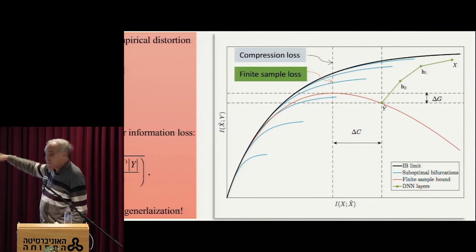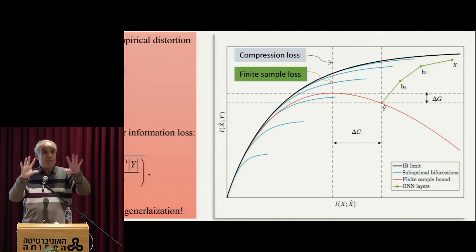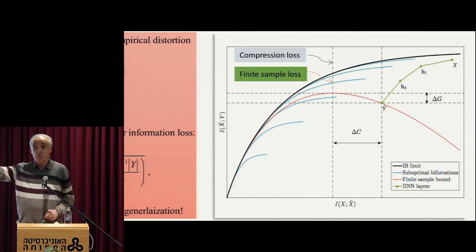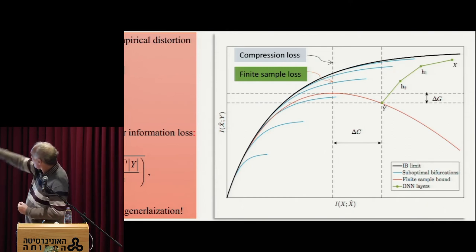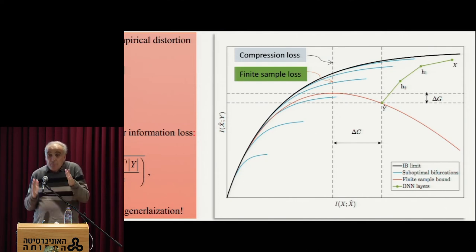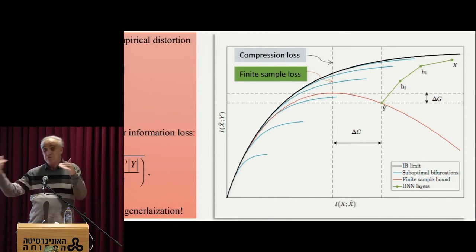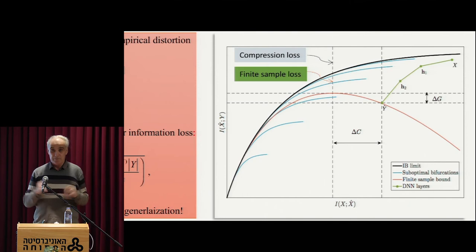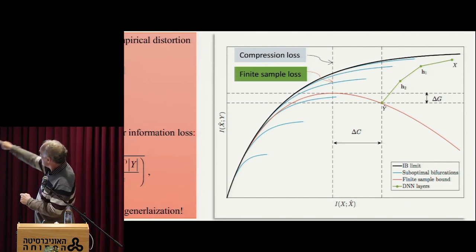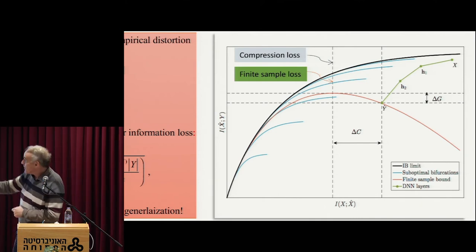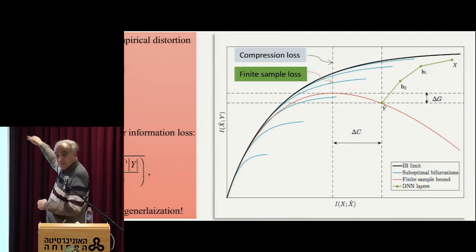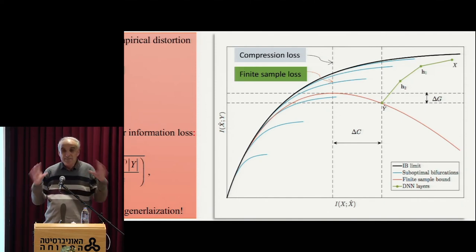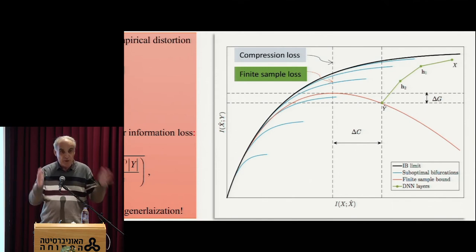So before I talk about bounds here, you should ask yourself: if everything happens in this plane and I really want to go up and left as much as I can, is there a bound that I cannot cross? And the answer is yes. There is this black wall, which is what we call the information bottleneck-like limit, which is essentially the maximum information about Y that you can get at a certain information about X — or the minimum information about X at that information about Y.